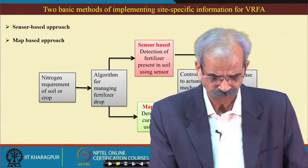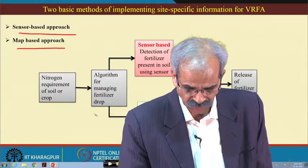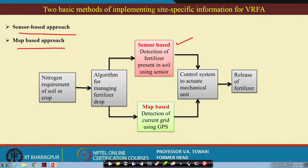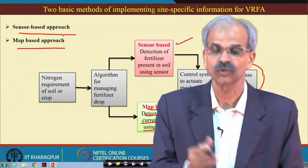In the map-based approach we have the sensor-based approach and map-based approach. The nitrogen requirement of the soil is known via an algorithm for managing the fertilizer drop. For the sensor-based approach, detection is done using sensors; for the map-based approach, detection of the current grid is done using GPS. The sensor-based approach is still being tried worldwide and not yet fully proven on-the-go, so most people use the map-based approach. However, the difficulty is that you need to create maps for all locations, determine the sampling frequency — whether after each crop or every three years — and decide the number of samples to take.